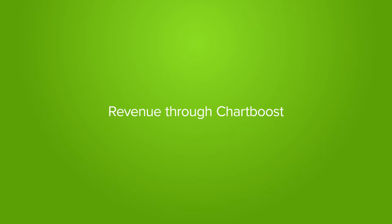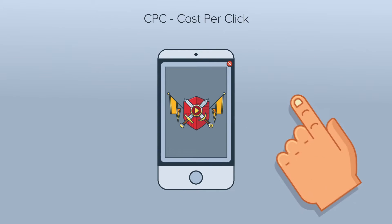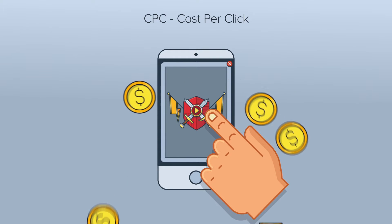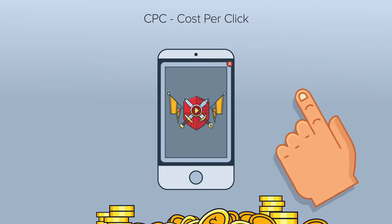Let's take a look at the different ways you earn revenue through Chartboost. CPC stands for Cost Per Click. Whenever a user clicks on an ad in your game, you earn revenue.